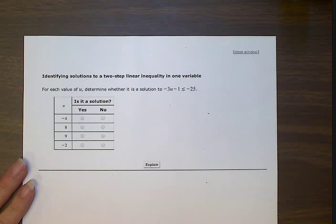Identifying solutions to a two-step linear inequality in one variable. For each value of u, determine whether it is a solution to negative 3u minus 1 is less than or equal to negative 25.